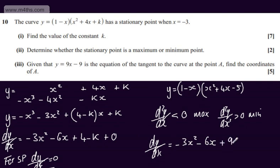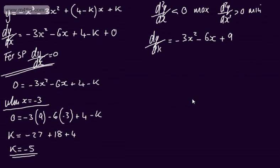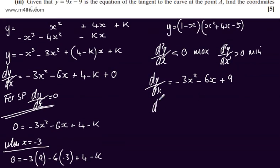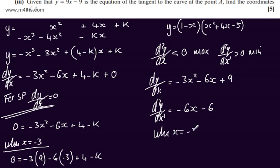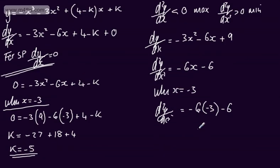Since k is minus 5, this becomes plus 9. Therefore the second derivative, d²y by dx², is minus 6x minus 6. When x equals minus 3, d²y by dx² equals minus 6 times minus 3, minus 6, which gives 18 minus 6, which is 12. Therefore we can state that this is a minimum, as d²y by dx² is greater than 0.